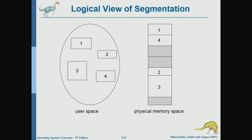In segmentation, we map these four segments into four blocks of memory in physical memory. The good thing is that they don't have to be adjacent or in order. So that gives us a lot more flexibility than we had in contiguous memory allocation. Each segment will be allocated separately, and they don't have to be adjacent or in order — any free block that fits a segment can be used for that segment.